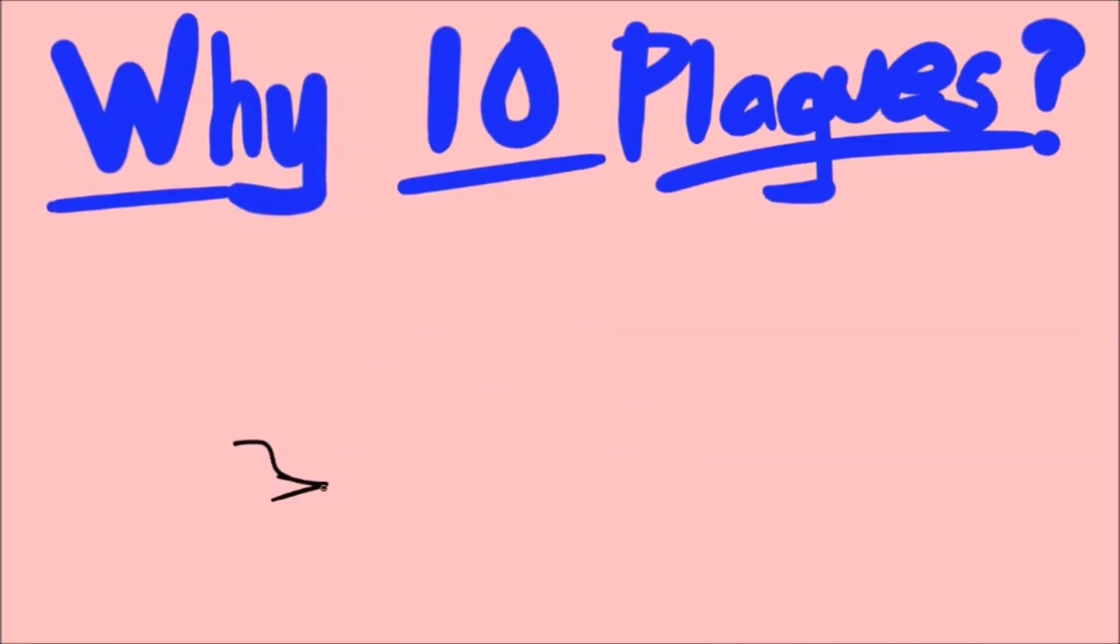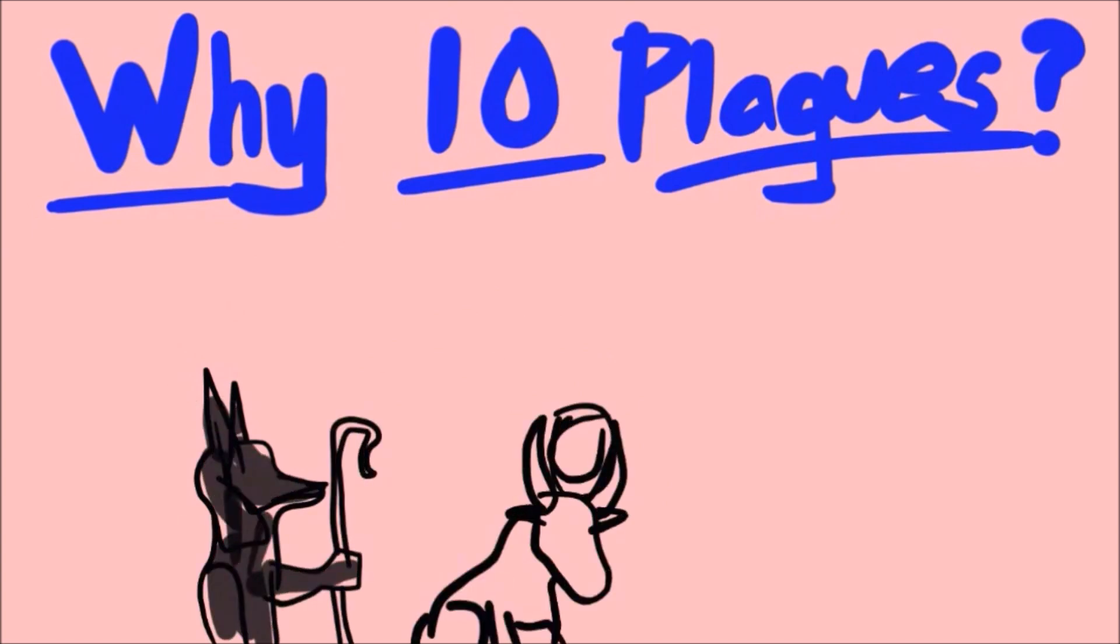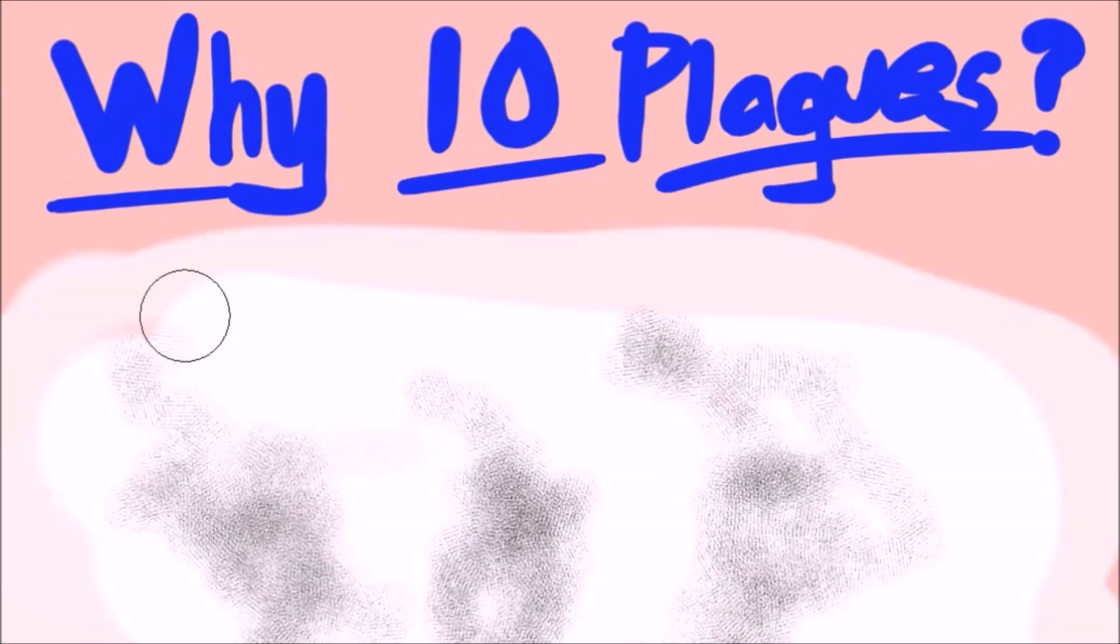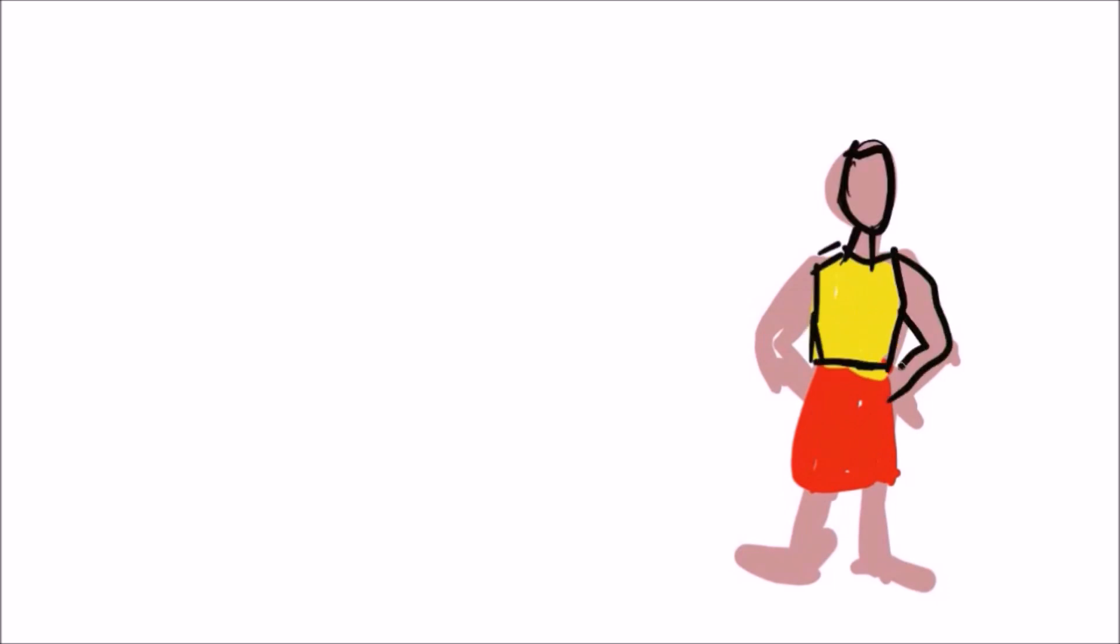So why ten plagues? Well, each plague illustrated a particular power of God over the idolatry of Egypt. In the ten plagues, we see that God's intent was not only to free his people from slavery, but more importantly to show all the nations of the world that he is the only true God. In each of the plagues, Pharaoh was given an opportunity to humble himself and admit that God is the true God. But in every opportunity, Pharaoh instead chose to harden his heart in pride.